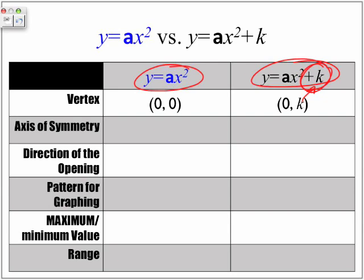In terms of axis of symmetry, remember, as we said, the axis of symmetry is represented by whatever value of x is in the vertex. So x is equal to 0, x is still equal to 0 for both formats.